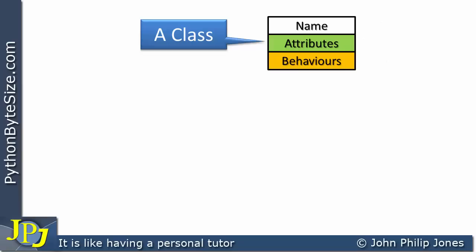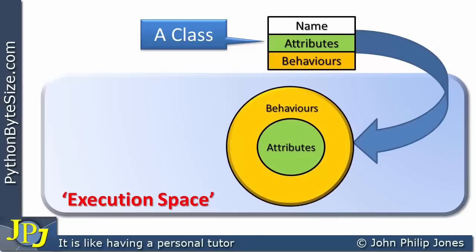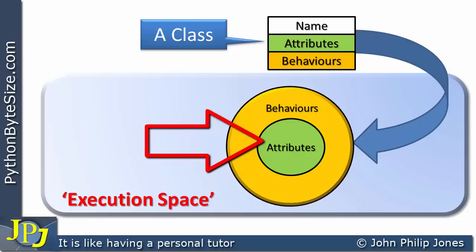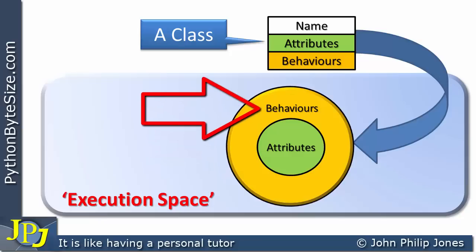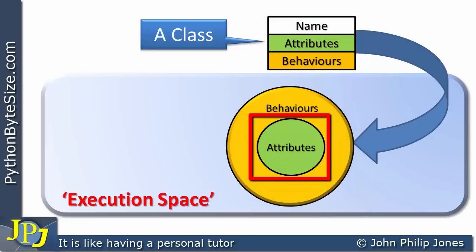When we want an instance of a particular class, we think of the execution space and the fact that from the class, an object is created. Diagrammatically, I like to show attributes in the center of a circular shape, with behaviors surrounding those attributes. I like to have a mental picture of a class as a rectangular shape and an object as a circular shape that has attributes at its core, with particular behaviors surrounding that core.